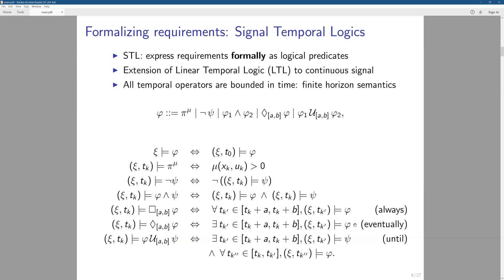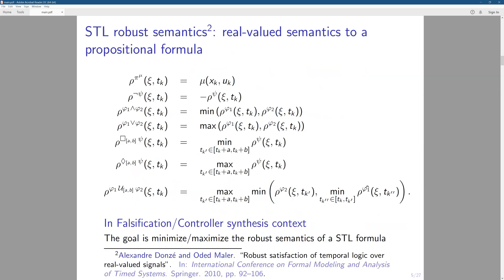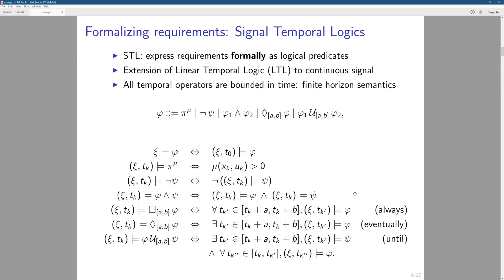And eventually it's just saying that this requirement just needs to be satisfied for once in this time interval. And until is saying that, so until the psi occurs, phi needs to hold until the psi has been satisfied. Then we do not care about whether phi holds or not. That's the until. So that's the predicating way to express the signal temporal logic.